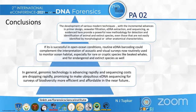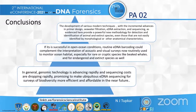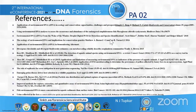In conclusion, advances in techniques such as primer design, seawater filtration, eDNA extraction, and sequencing provide new methodology for detection and identification of animals and extinct species. Environmental DNA barcoding is useful for extinct species, endangered species, and cryptic species — for example, those that may be camouflaged, such as large whales. With genomic technology advancing rapidly and sequencing costs dropping, ubiquitous eDNA sequencing for biodiversity surveys holds great promise for the future.